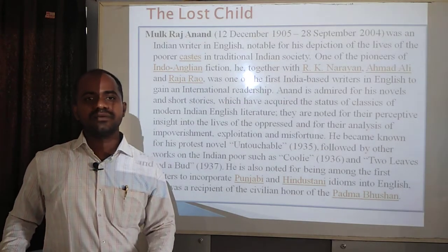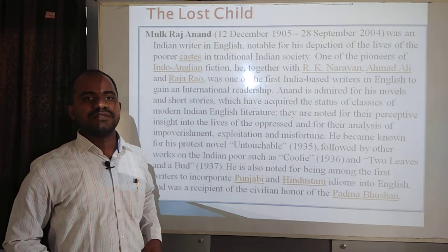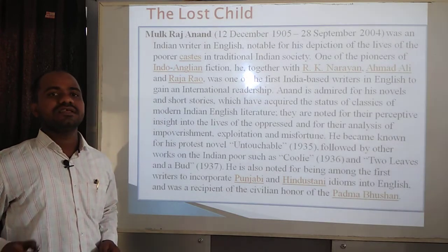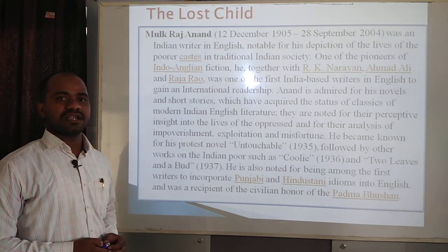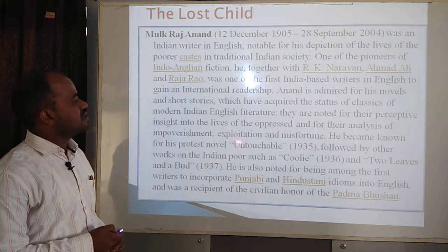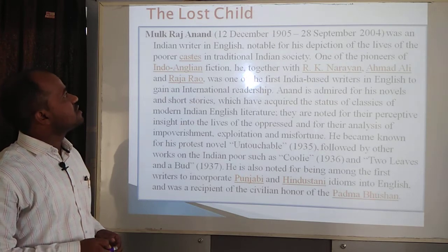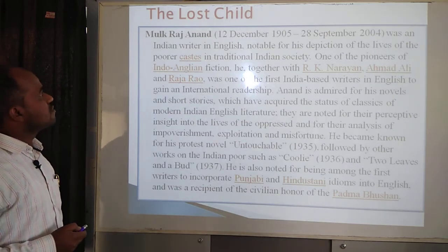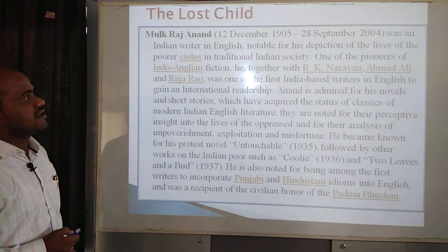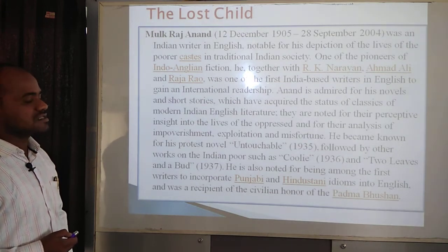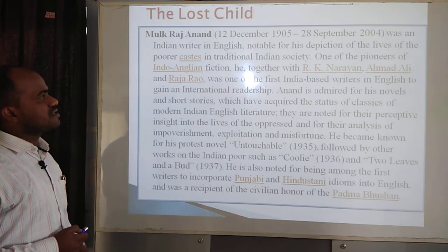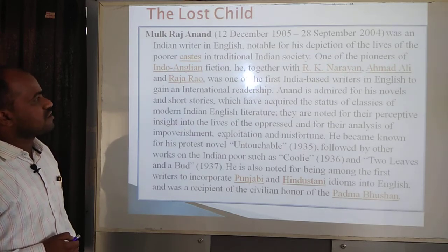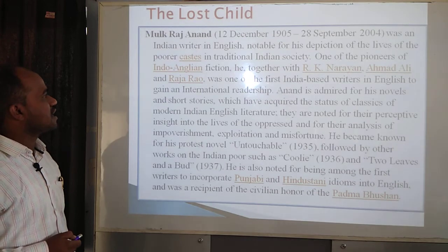Before starting the chapter, we should know about the writer. The writer is Mulk Raj Anand, who was honoured by the Central Government with the Padma Bhushan Award. He was born on 12th December 1905 and passed away on 28th September 2004. He was an Indian writer in English, notable for his depiction of the lives of the poor, the downtrodden and backwards. He worked alongside R.K. Narayan, Ahmad Ali, and Raja Rao, and was one of the first Indian writers in English to gain an international readership.